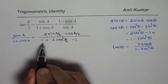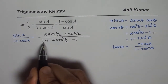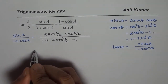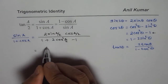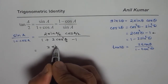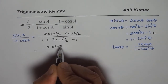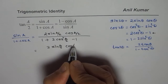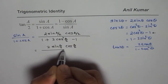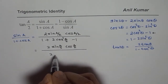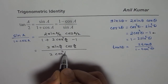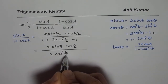Since we used cos a equals 2 cos squared(a/2) minus 1, the 1 and minus 1 cancel, leaving 0. So in the numerator I have 2 sine(a/2) cos(a/2), and in the denominator I now have 2 cos squared(a/2).